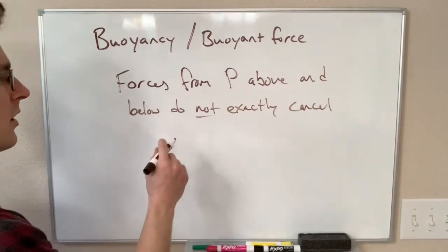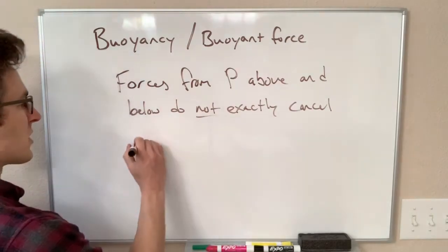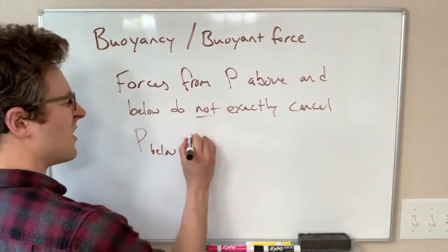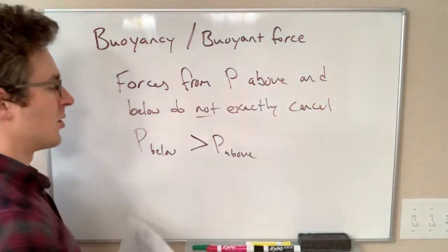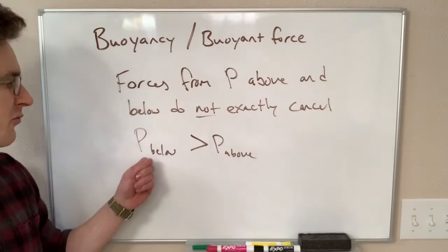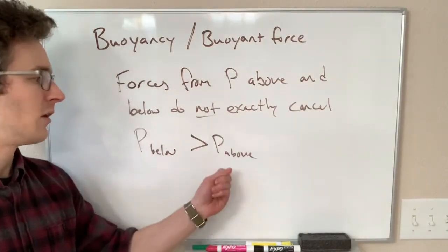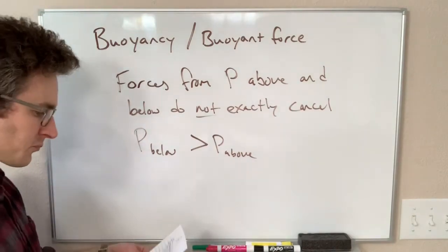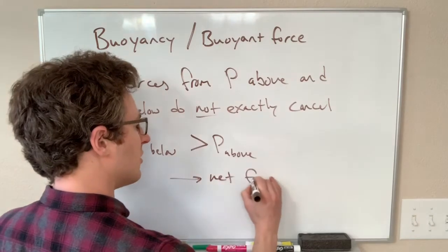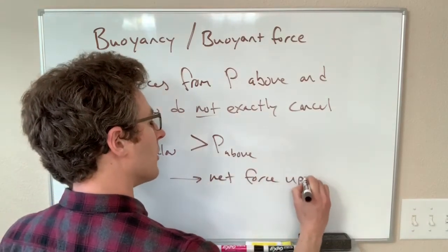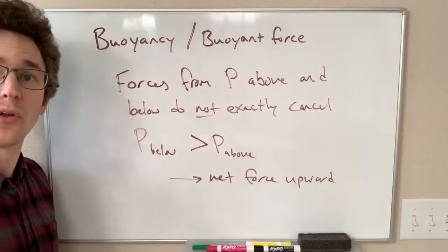As it turns out, because our force changes with our height in the fluid, the pressure below is a little bit greater than the pressure above. As a result, the force that an object feels from below from the fluid is going to be a little bit bigger than the force it feels from above. So the result of this is that we get a net force in the upward direction from the fluid, and this is called the buoyant force.